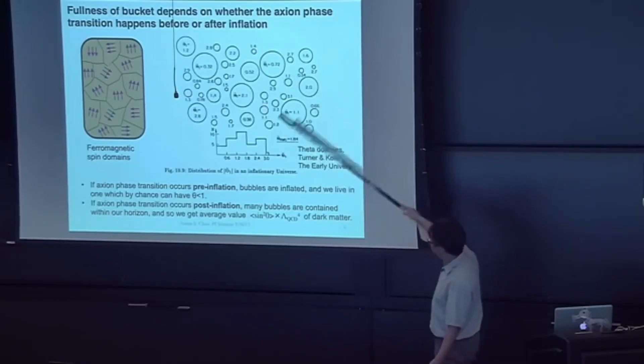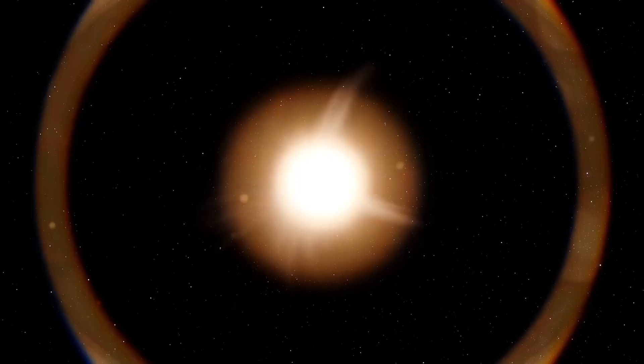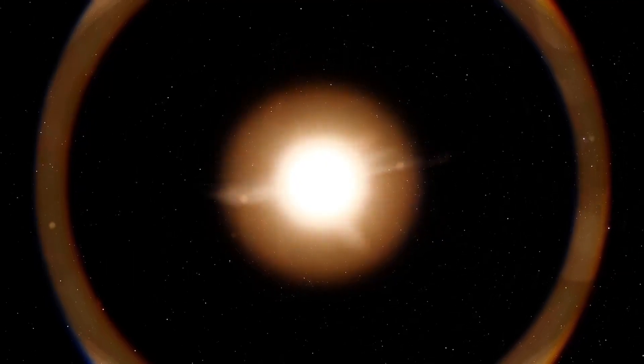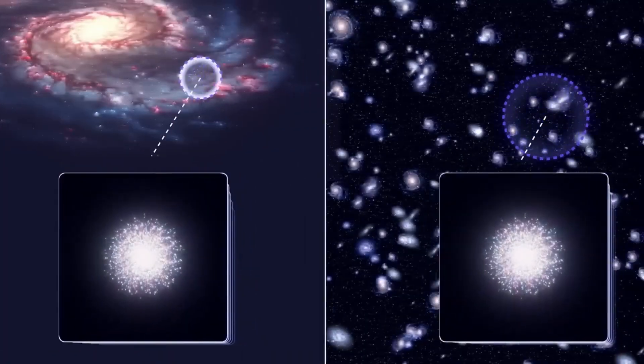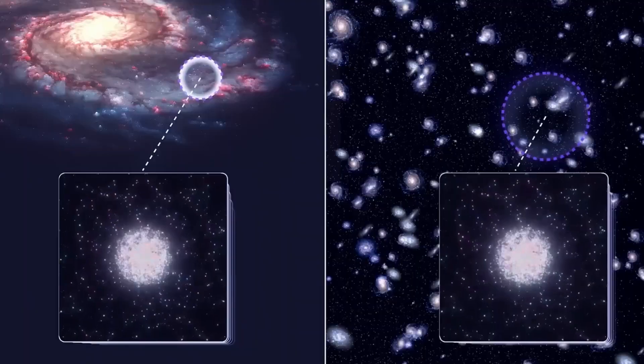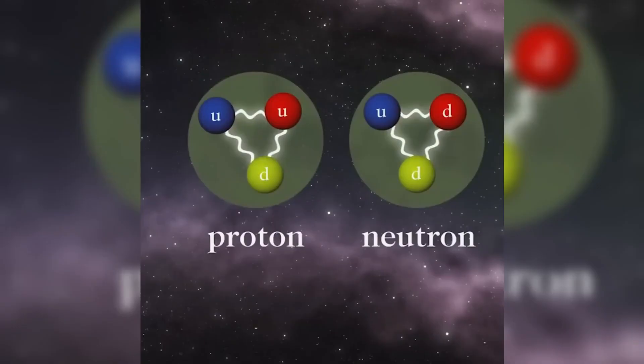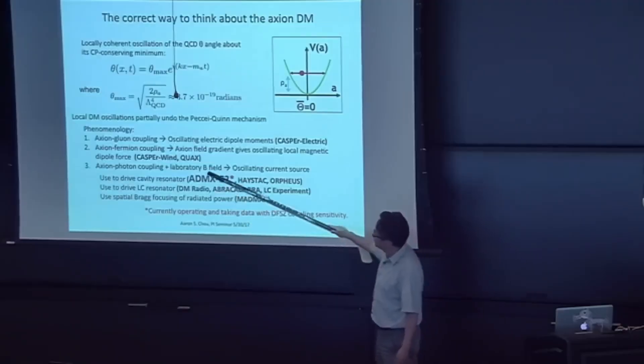Axions were first proposed as a solution to one of the biggest mysteries in particle physics: the strong CP problem. In quantum chromodynamics (QCD), the theory that describes the strong nuclear force, there is an unexplained imbalance that should, in theory, cause certain particles to behave differently than they do.